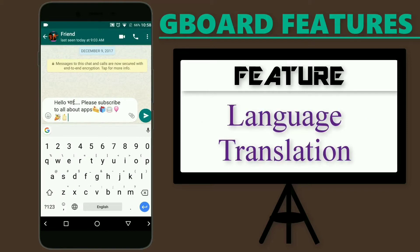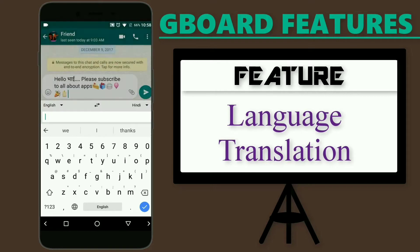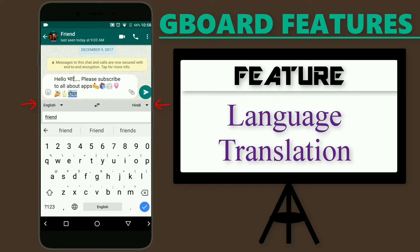Google Translate is now included in the Google keyboard, and you can translate any language from Gboard. Tap on the G button and select the third option. Select the input and output language, then enter or paste the text you wish to translate. In case you don't know what the input language is, it will be automatically detected.